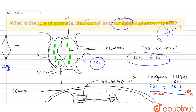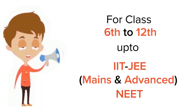In summary: stomata enable gas exchange, providing the carbon dioxide needed for photosynthesis. Chlorophyll absorbs red and blue light required for photosynthesis. Sunlight helps in two ways: it drives transpiration and activates the PS1 and PS2 systems.